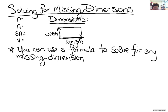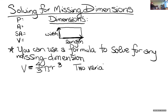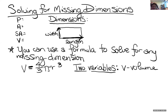For example, the volume of a sphere formula: V equals four-thirds times pi R cubed. This formula has two variables — V and R. Pi is not a variable; pi is a known number, it's constant, always 3.14159... But R is a variable — it's the radius. So I could use this formula to solve for V like we've been doing, or I can use it to solve for a missing R.